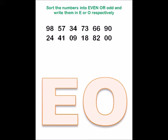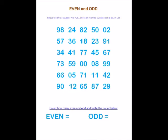The next one is circling the even numbers and putting a cross on the odd numbers.